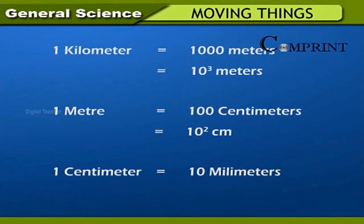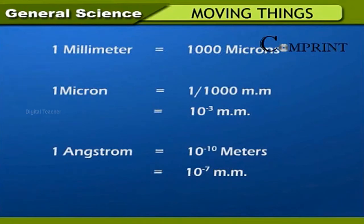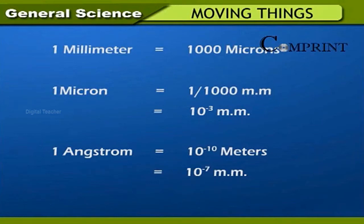Multiples and sub-multiples of basic units: one kilometer is equal to one thousand meters, or 10 cubic meters. One meter is equal to one hundred centimeters, equal to ten square centimeters. One centimeter is equal to ten millimeters. One millimeter is equal to one thousand microns. One micron is equal to one by one thousand millimeters, or equal to 10 to the power of minus three millimeters. One angstrom is equal to 10 to the power of minus 10 meters, or 10 to the power of minus seven millimeters.